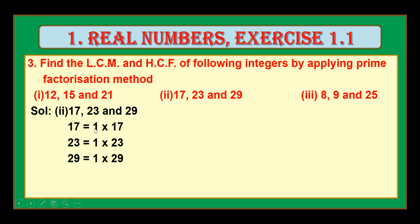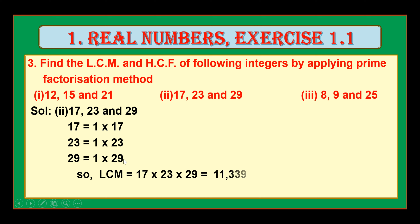Please keep in mind that 1 is not a prime number — 2 is the least prime number. Since 17, 23 and 29 are prime numbers, there are only 2 factors for each: 1 and the number itself. LCM means you pick up all the prime factors — 17, 23 and 29 — and multiply them. You get 11,339. For HCF, the common factor among all three is 1. Therefore, HCF is 1. The HCF of any set of prime numbers is always 1. Similarly, the HCF of any set of co-primes is always 1.